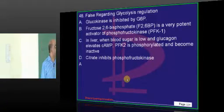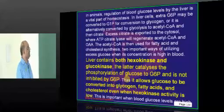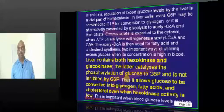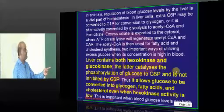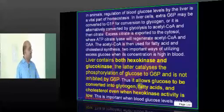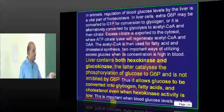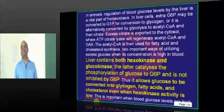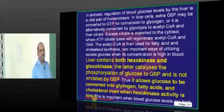Coming to glycolysis, regulation of glycolysis - what is the effect of glucose-6-phosphate on glucokinase and hexokinase? Basically, liver contains both hexokinase and glucokinase. The glucokinase catalyzes the phosphorylation of glucose to glucose-6-phosphate and it is not inhibited by the glucose-6-phosphate. That is the reason it will allow the glucose to be converted into glycogen, fatty acids, and cholesterol even if the hexokinase activity is being shut down.